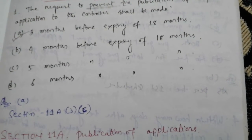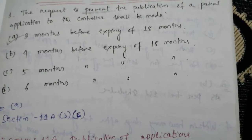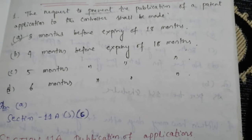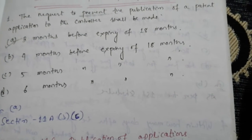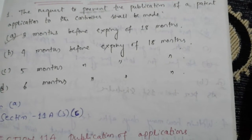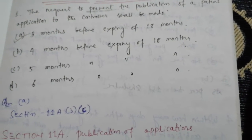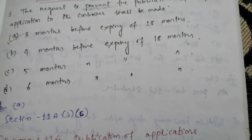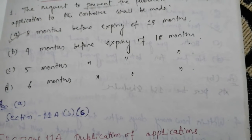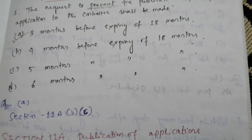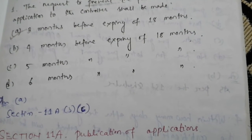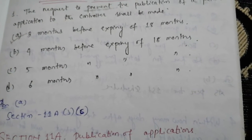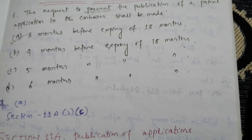The answer is option A — that is, three months before expiry of 18 months. Please refer to Section 11A, subsection 3, clause C. Thank you.